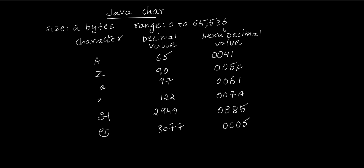The range of char is 0 to 65,536, which means Unicode can support 65,537 distinct characters. This allows Unicode to cover all different languages and distinct characters, which is why Unicode is very popular. In Unicode, every character can be represented by a unique code.